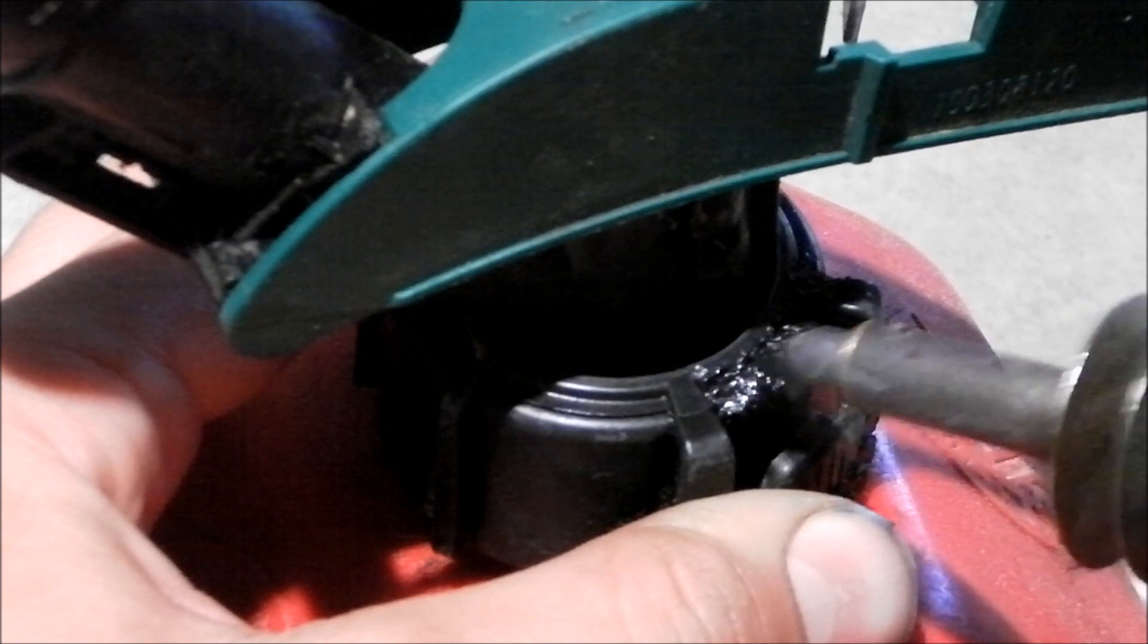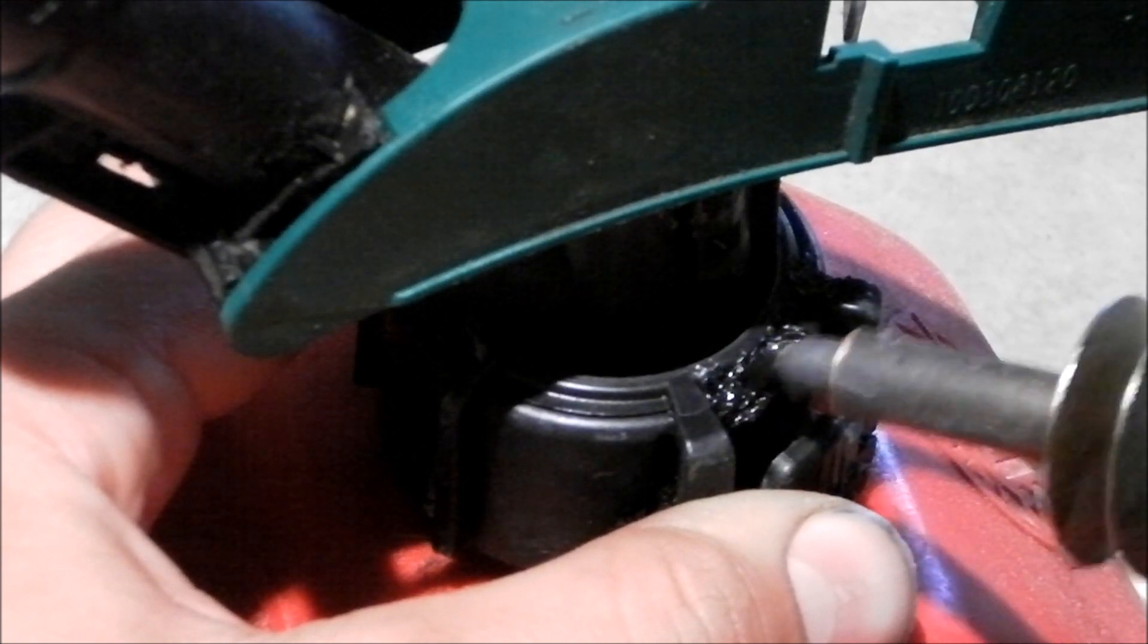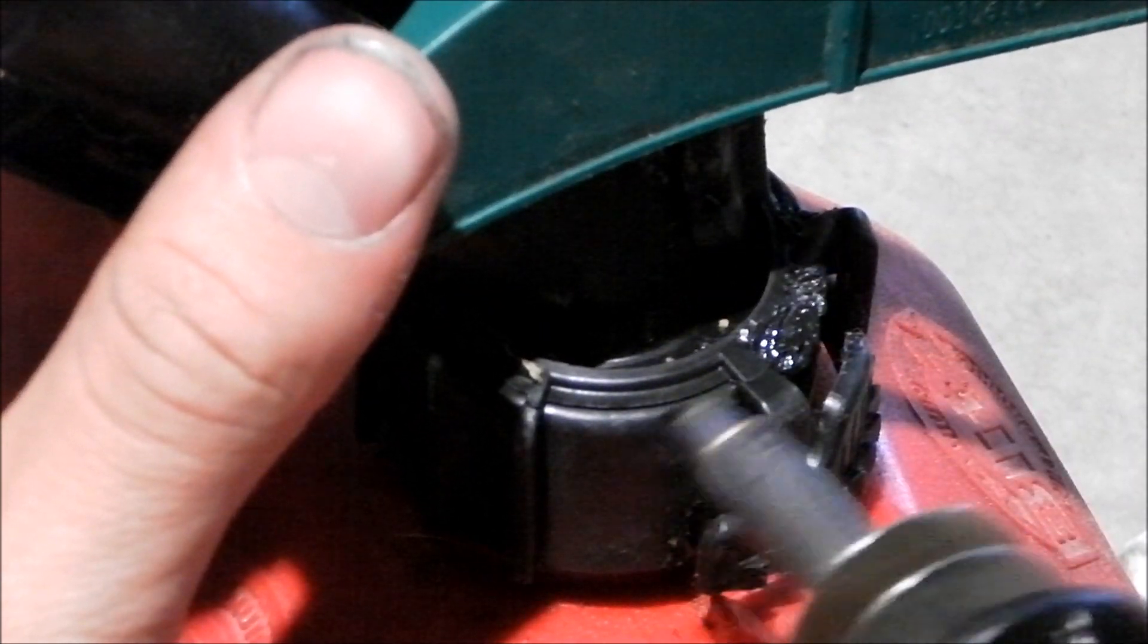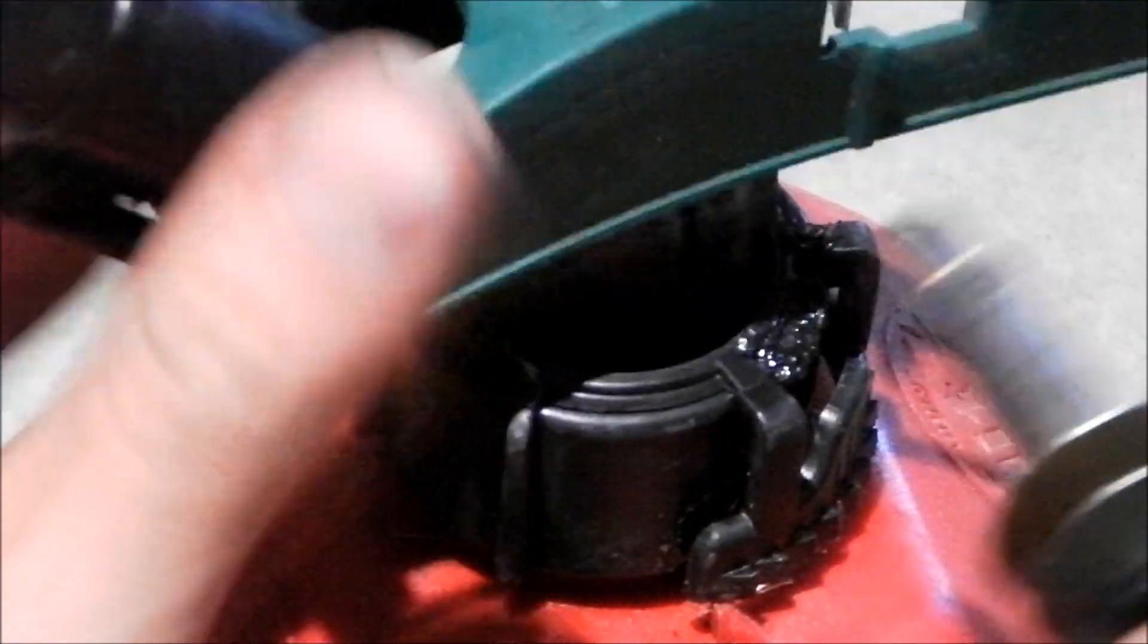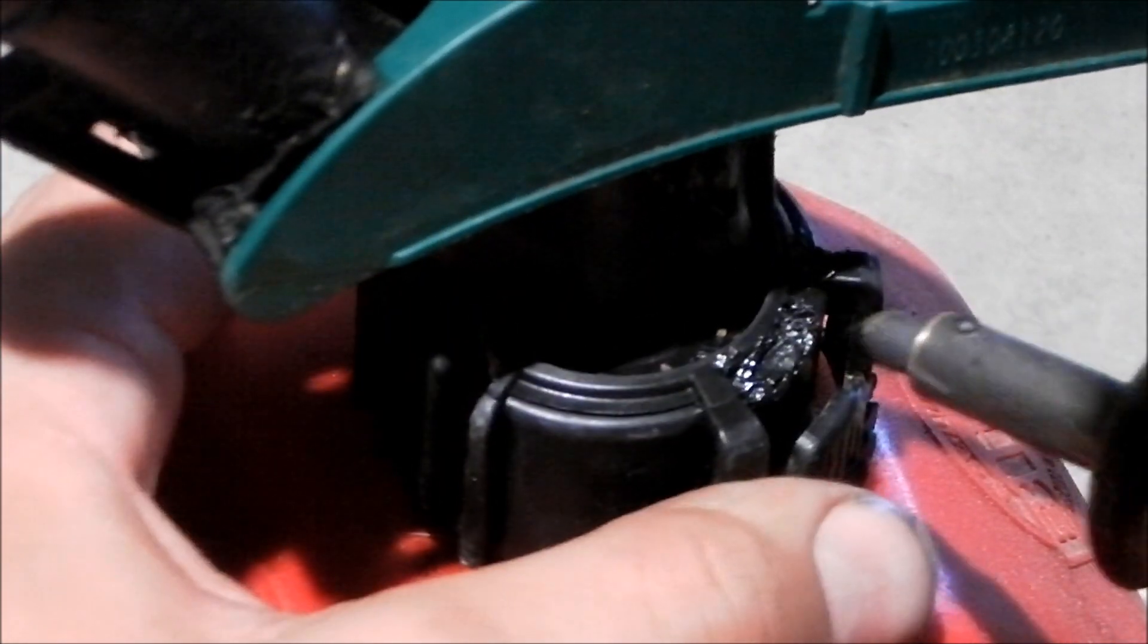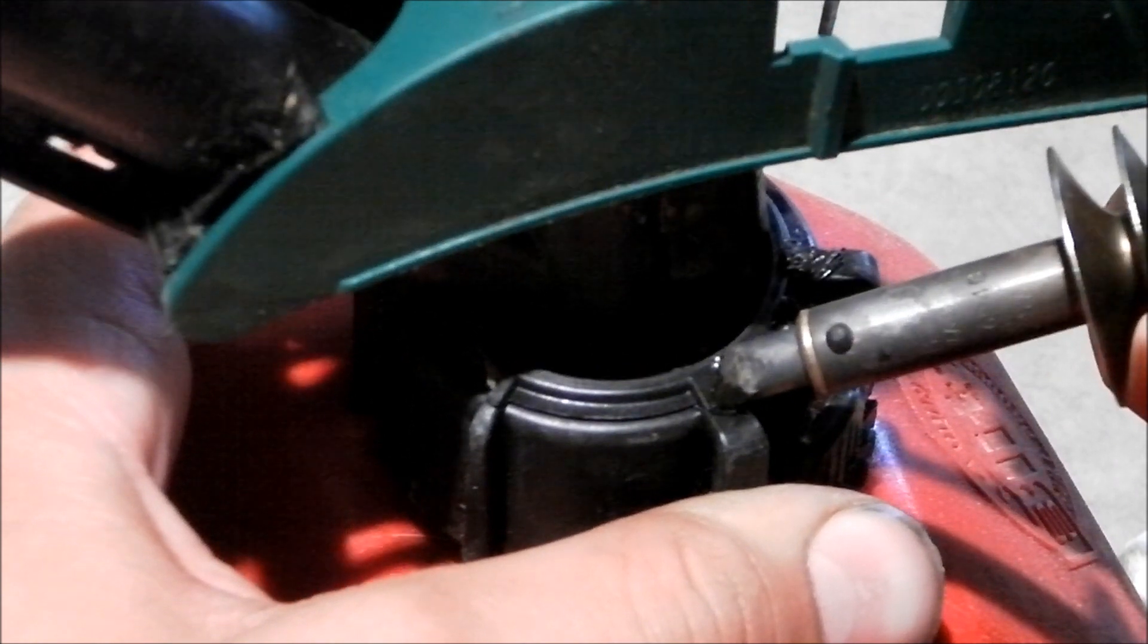You want to melt down far enough to where it's not going to break again. But you don't want to melt down too far to where you're melting into this piece. You're going to want to melt into this piece of course but you don't want to melt into this actual piece that's under it that it's pressing on to seal the gas tank.